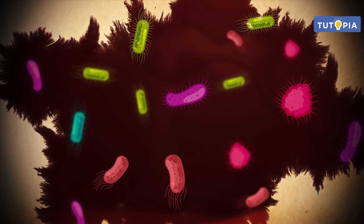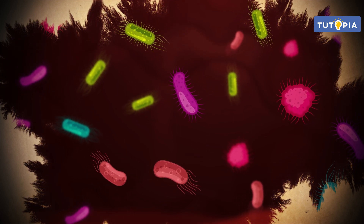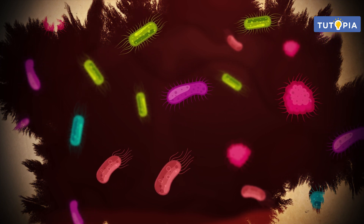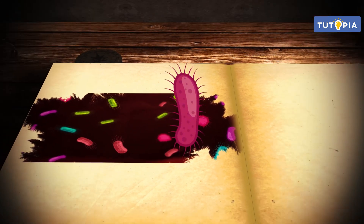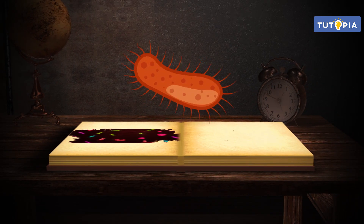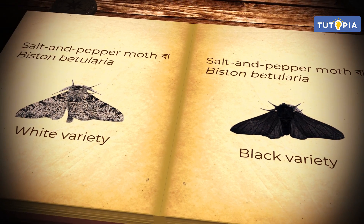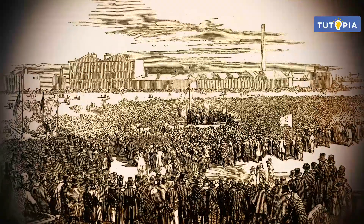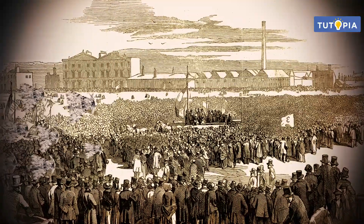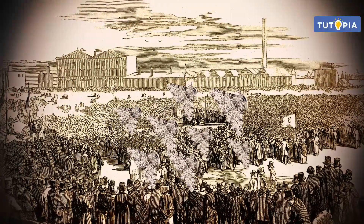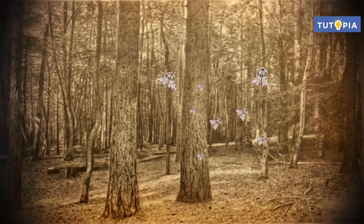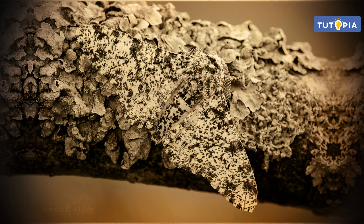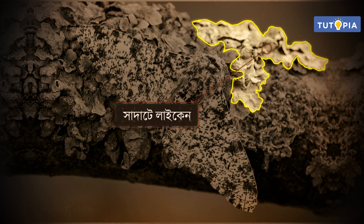এই ধরনের প্রাকৃতিক নির্বাচনের আরেকটি ছবি জুড়ি দিয়ে দেখাতে চাই। গাছে থাকা পোকা - চাকরাগ্তে হাওয়া - বৃক্ষ যেখানে গাছগুলোর উপরে সাদা লাইকেনের আকারে ঢেকে থাকে। সাদা লাইকেনের মধ্যে থাকার কারণে এই পোকাগুলো সহজেই মিশে যায়।